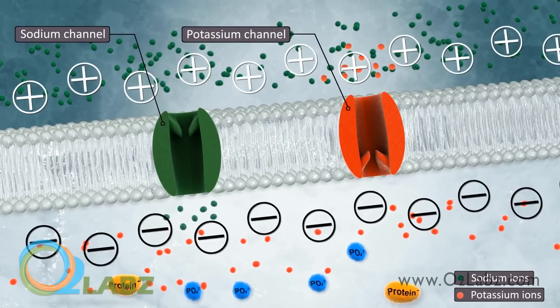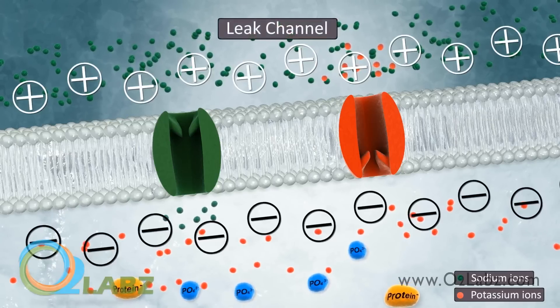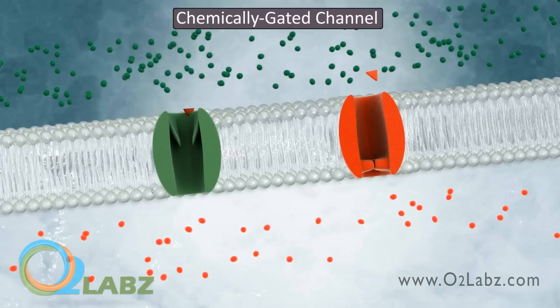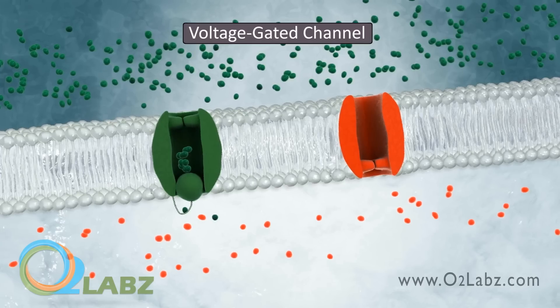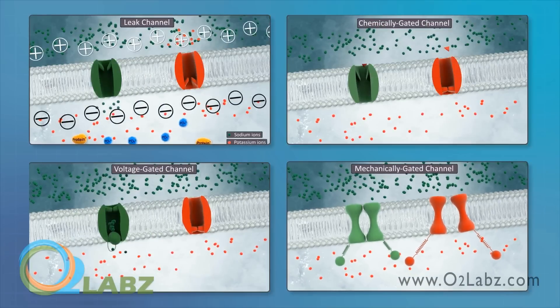There are four types of channels through which ions can pass. Leak channels are typically always open. The three types of gated channels, chemically, voltage, or mechanically gated, must open their gate to allow the passage of ions.